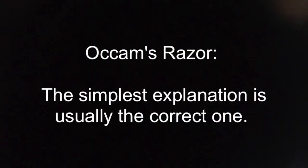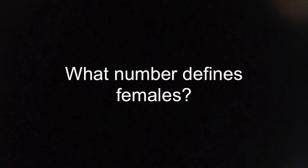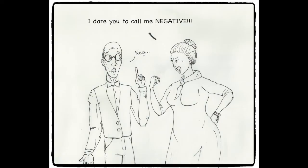Occam's razor states that the simplest explanation is probably true. Occam's razor is like the Me Too movement. If you ignore it or change the rules, you lose. So, what number defines females? If one plus one equals two, but man and woman can equal three or seven or something else based on reproduction, what number differentiates between masculine and feminine?